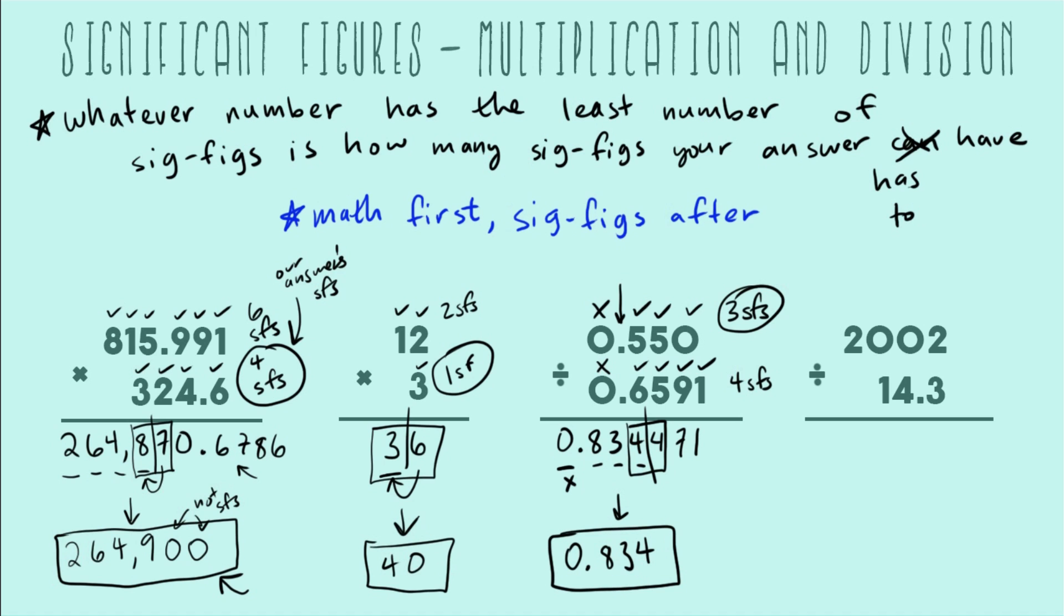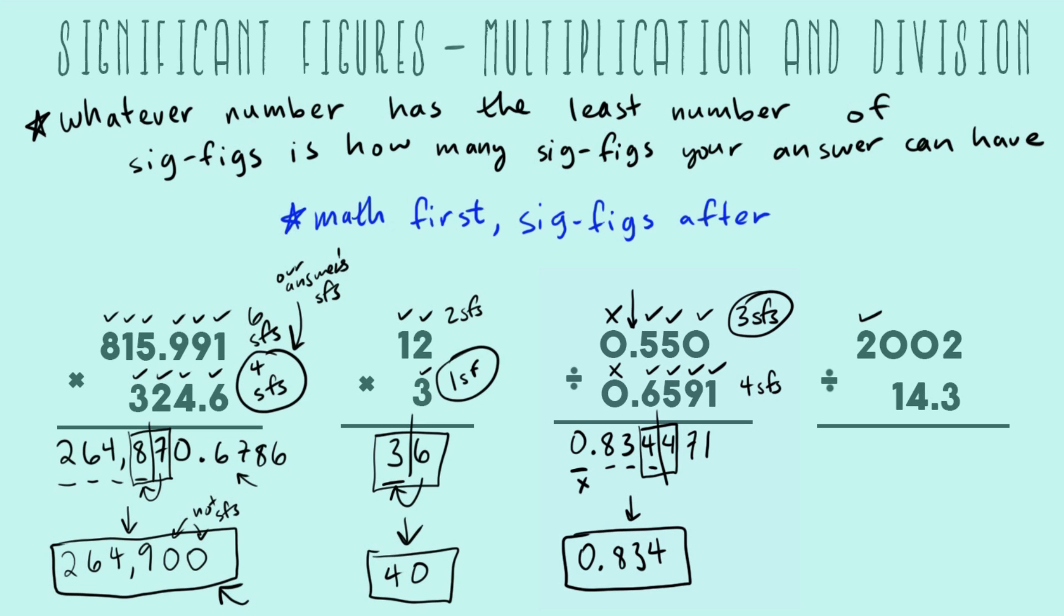Let's do one more example with a couple more zeros to consider. This is 2002. Both of our twos count because they're not zeros. Both of these zeros count because they're middle zeros, and middle zeros always count as sig figs. This has four sig figs. Our 14.3 is all non-zeros, so that's three sig figs. We put this into our calculator and it comes out as 140.